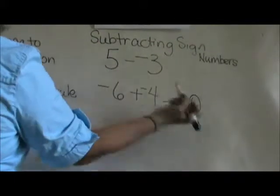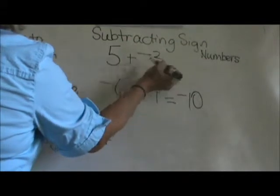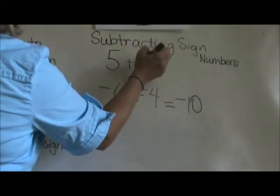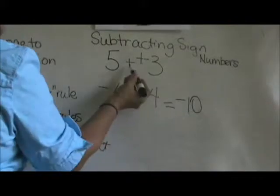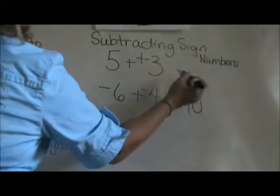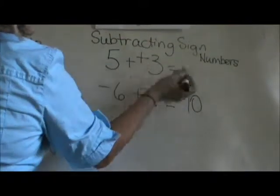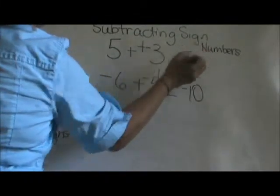Since this is subtraction, I am going to change it to addition. But I have to make a second mark here because subtracting a negative is the same thing as adding a positive. The 2 mark rule is just 5 plus 3 which is 8.